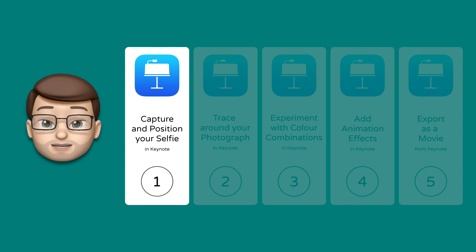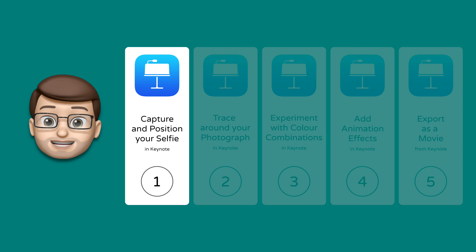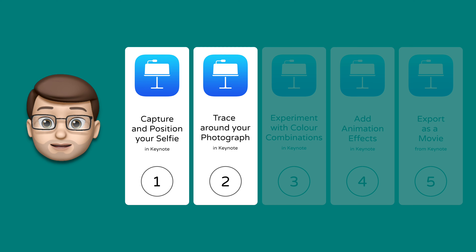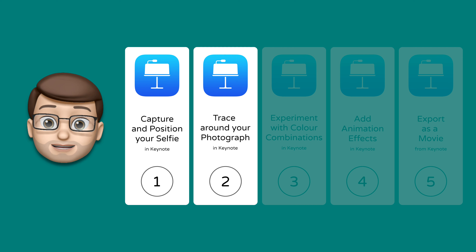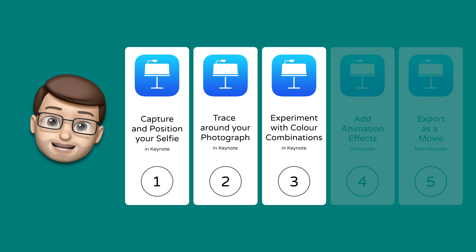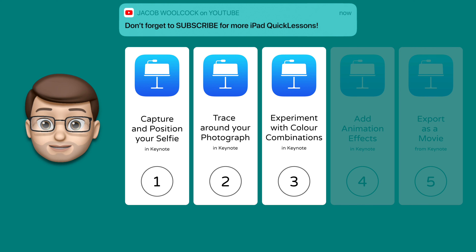To get this working, the first step is to capture a selfie on your iPad. I'll show you how to do that and how to position it in Keynote ready to go. Then we're going to use an Apple Pencil or Logitech Crayon to do a line drawing all around our face, in one movement. Then we're going to experiment with background and foreground colours to make your image really pop off the screen.